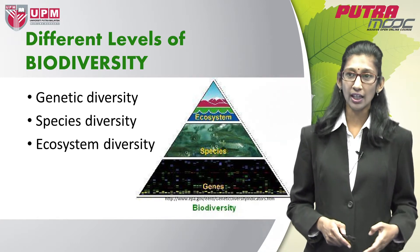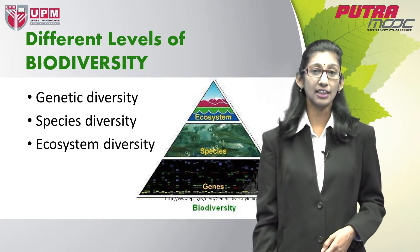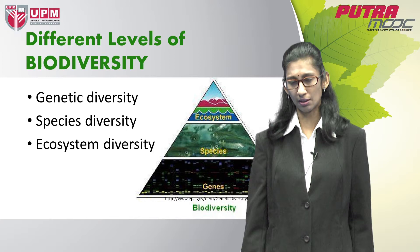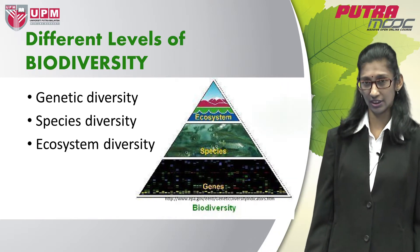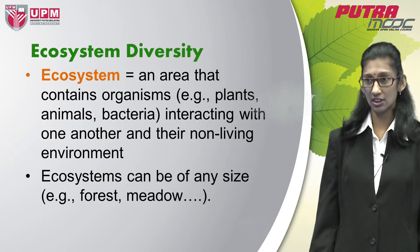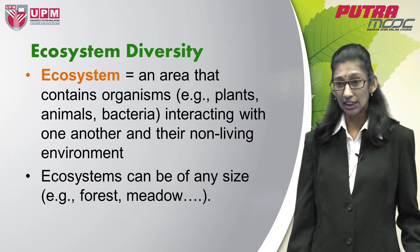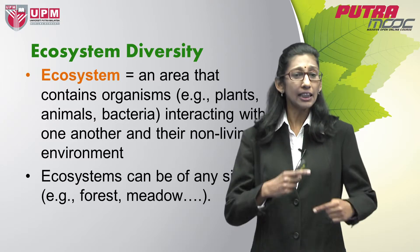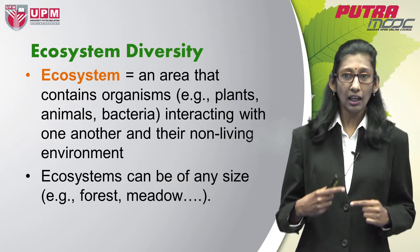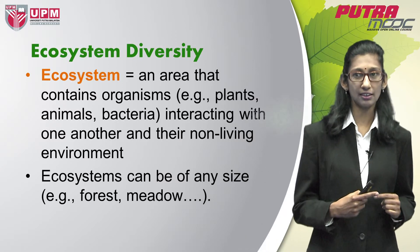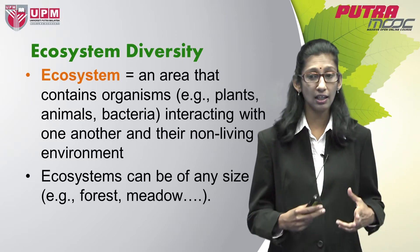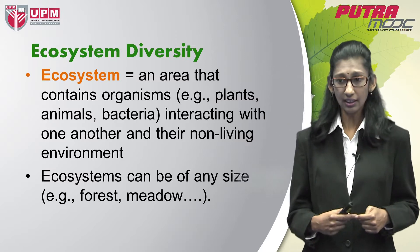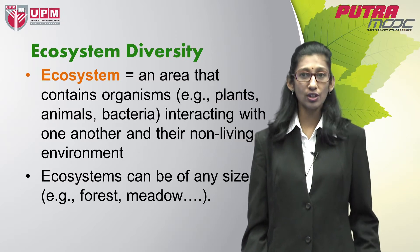Let us first look at what is ecosystem diversity, but I should first define what an ecosystem is before we look at ecosystem diversity. An ecosystem is an area that contains organisms — for example, plants, animals, bacteria — interacting with one another and, more importantly, interacting with their non-living environment.